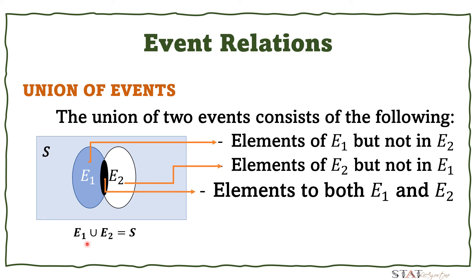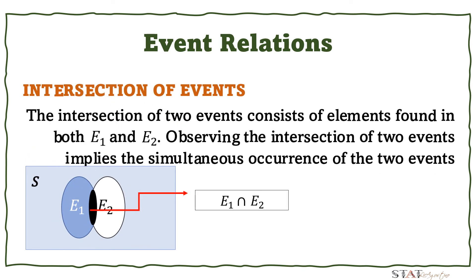Whenever you see the letter U symbol, that represents union. So E1 union E2 encompasses the entire sample space including all combined areas. The intersection of two events consists of elements found in both E1 and E2. Observing the intersection implies simultaneous occurrence of both events — shown as the dark shaded area, represented by an inverted U symbol (∩). You read this as the intersection of event 1 and event 2.